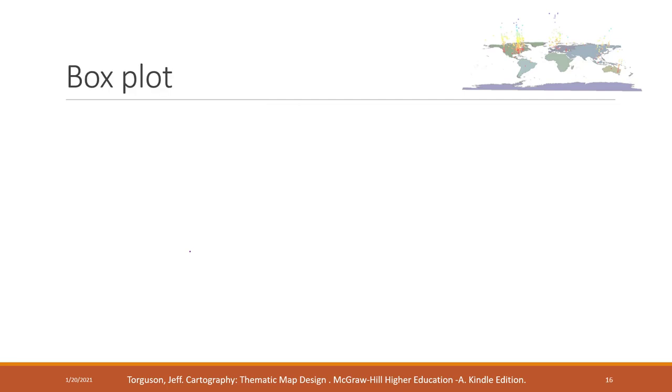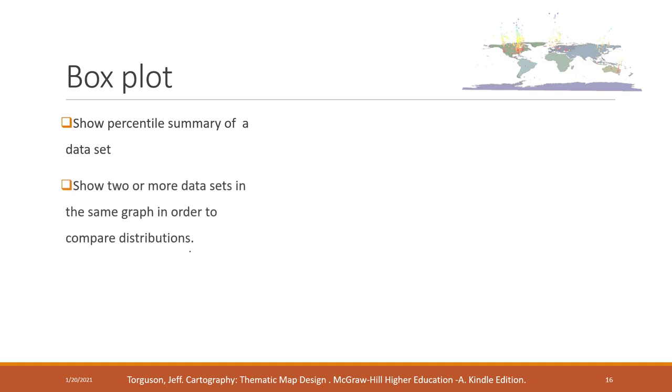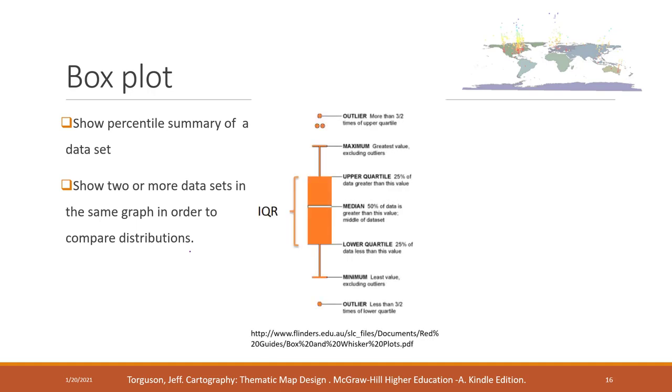The second graph is called the box plot. Box plot is used to show the percentile summary of the data set. It is used to compare two or more data sets to compare their distributions. The middle bar is the median value, not the mean value. Within this box, we have the upper and lower quantile. So 25% of the data is greater than this value, and 25% of the data is less than this value. Within this box, we have 50% of the data.